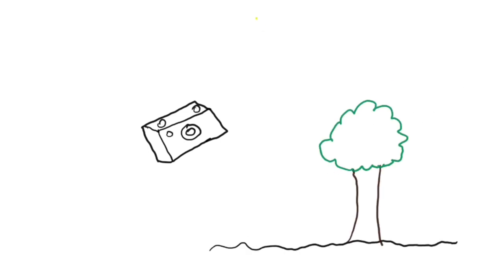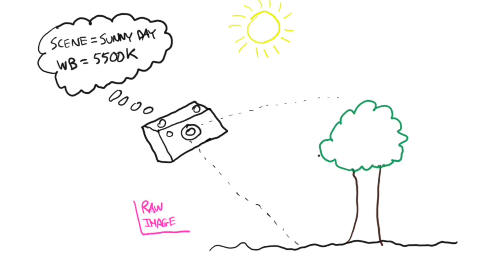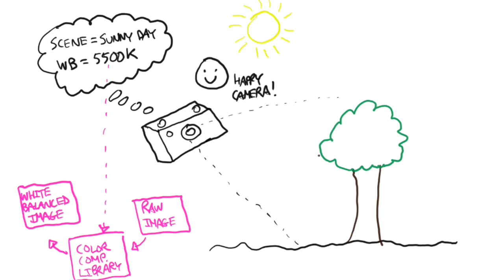Let's look at an example. You're shooting your camera with auto white balance, and it's looking at a scene of a tree that's lit up by the sun. So your camera measures it, meters it, and says the scene is a sunny day, so therefore the white balance will be 5500K. It then takes the raw image and goes to its color compensation library, applies the 5500K to an algorithm, and from that it comes out with a white balanced image, compensated for the scene.